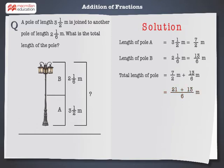This can be further written as 34 by 6 meters which can be simplified to 17 by 3 meters in the lowest form. This is equal to 5 and 2 by 3 meters.